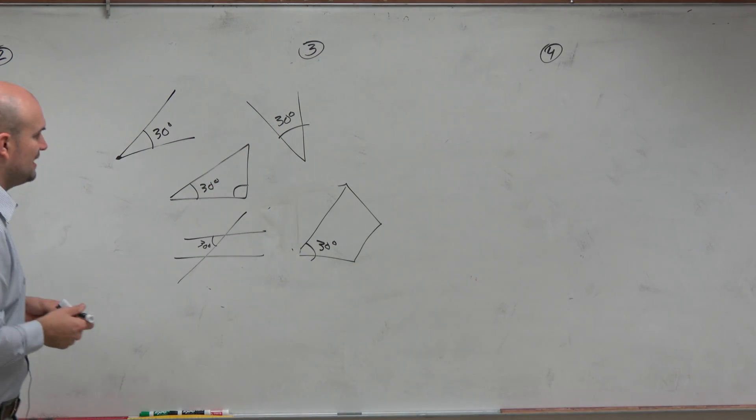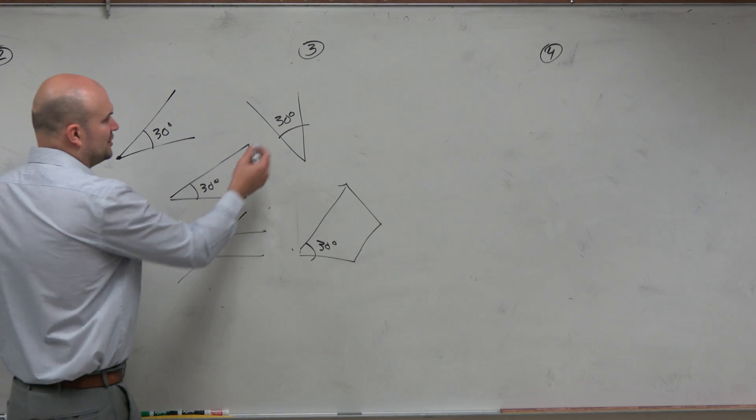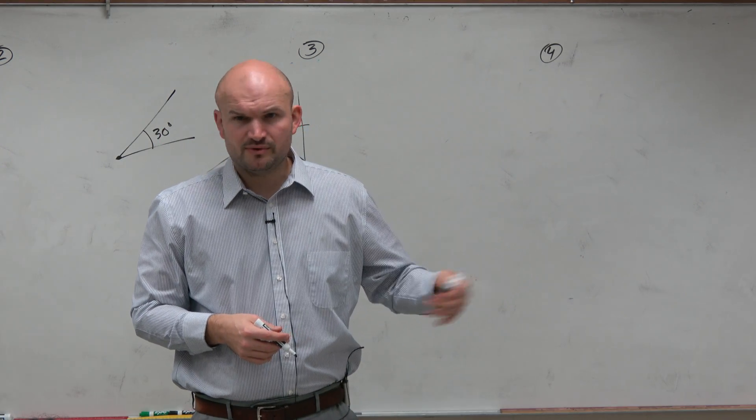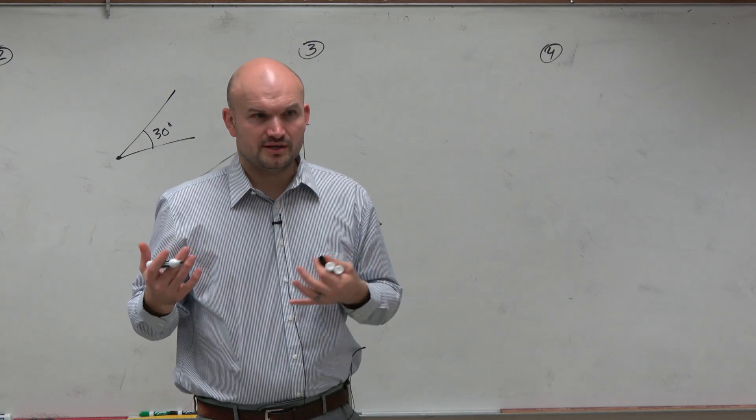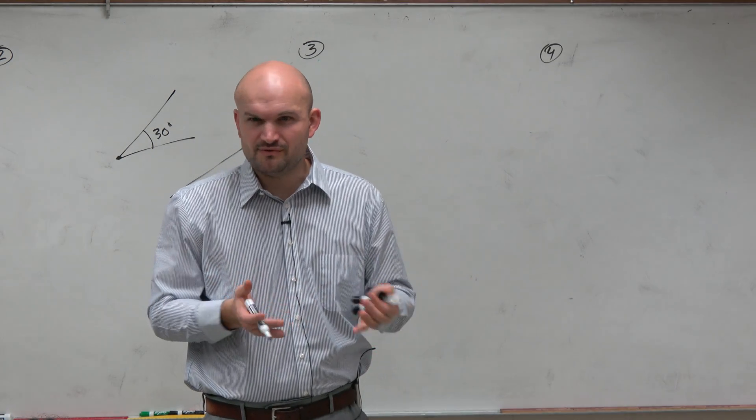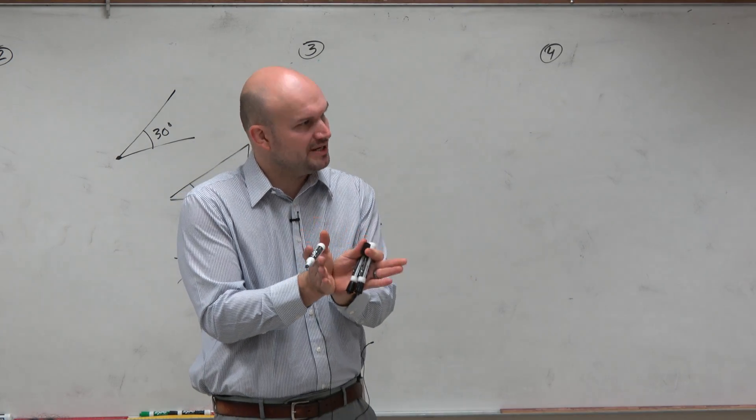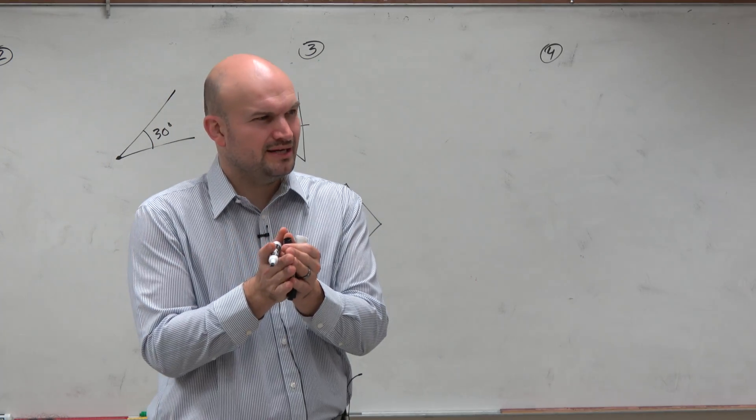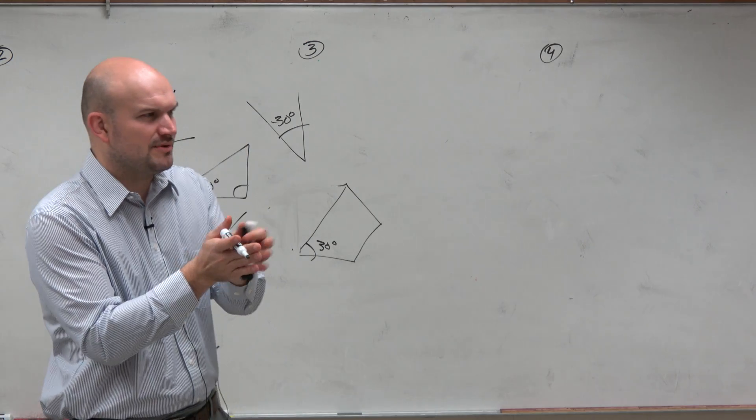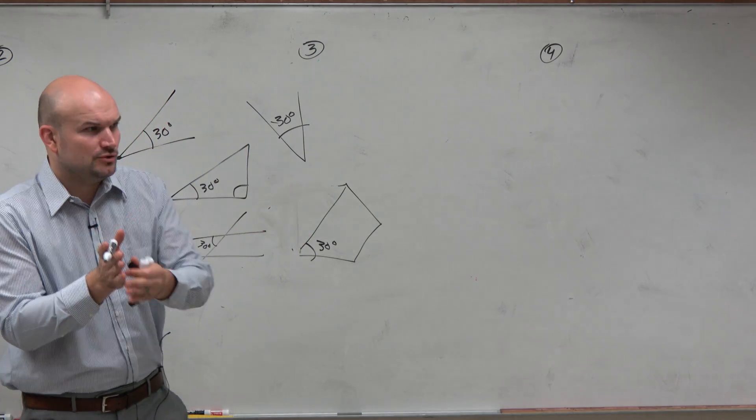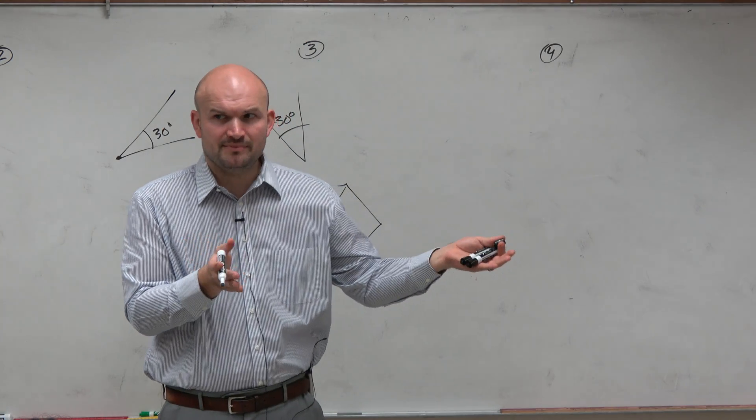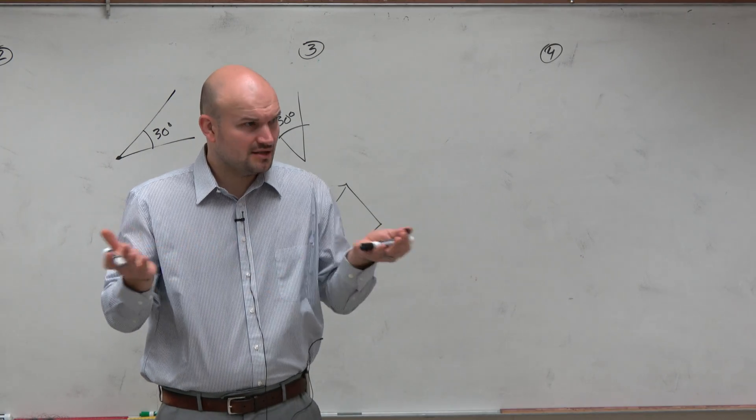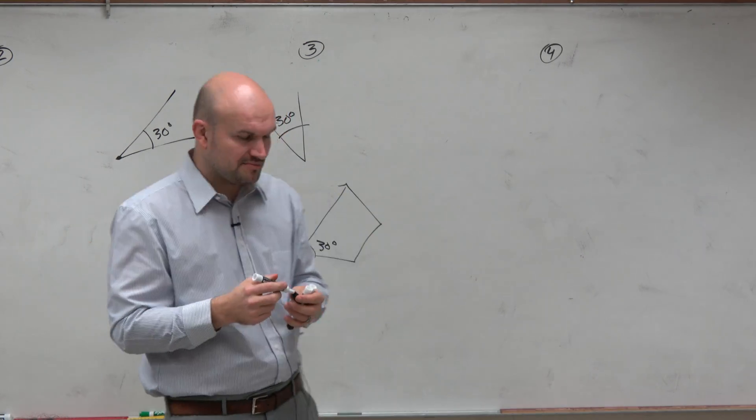And then the question came in when I asked you to draw something that's negative 30 degrees. Well, it should have sparked some confusion, because we really haven't, up to this point, talked about negative angles. We've only talked about angles as a measurement between two rays. So what exactly does it mean for an angle to be negative? If an angle just represents a measurement, like you walked five miles, what does it mean for you to walk negative five miles? We haven't talked about this, or you haven't really been exposed much to it.